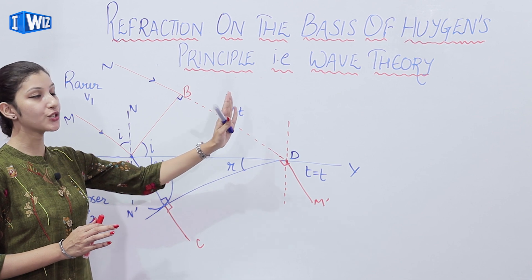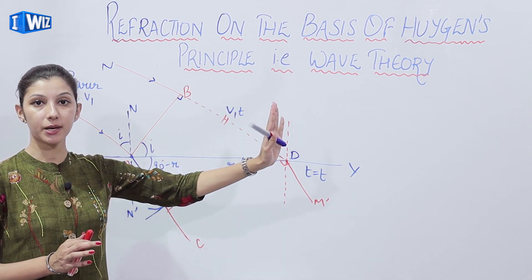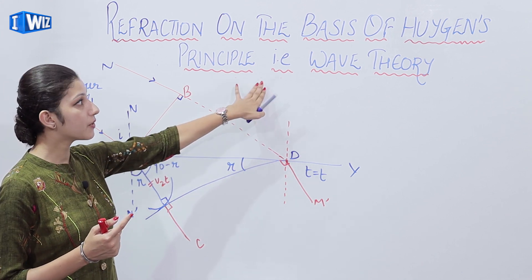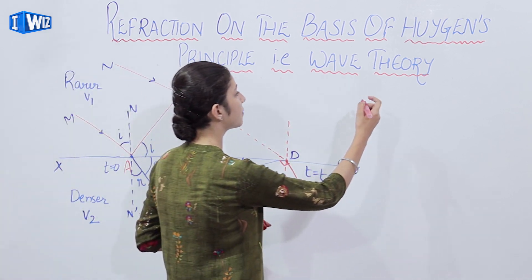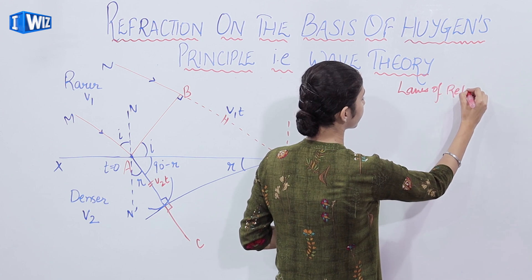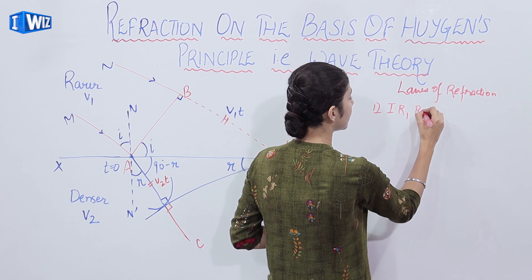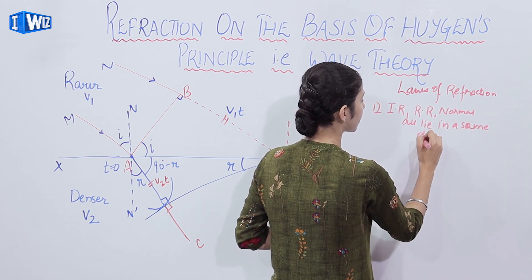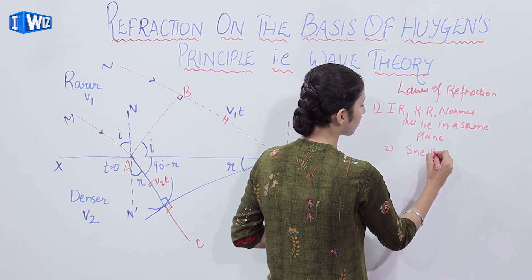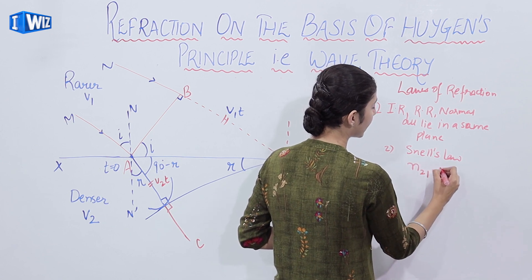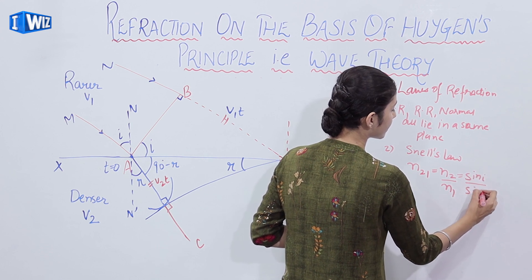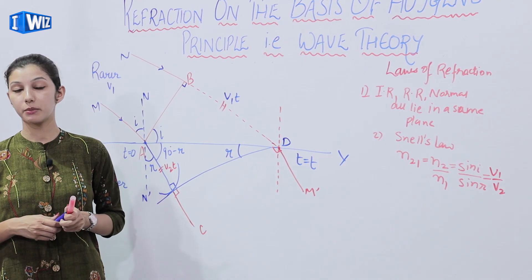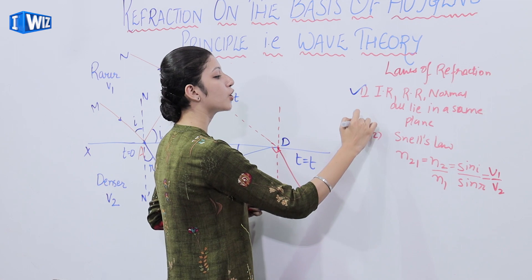Now we will study refraction on the basis of Huygens' principle, that is the wave theory. We studied refraction in Ray Optics, but there we assumed light behaves as a particle; here we treat light as a wave. We will use Huygens' principle to prove the laws of refraction. The laws of refraction are: first, the incident ray, refracted ray, and normal all lie in the same plane; second, Snell's law — n21 = n2/n1 = sin i / sin r = v1/v2.